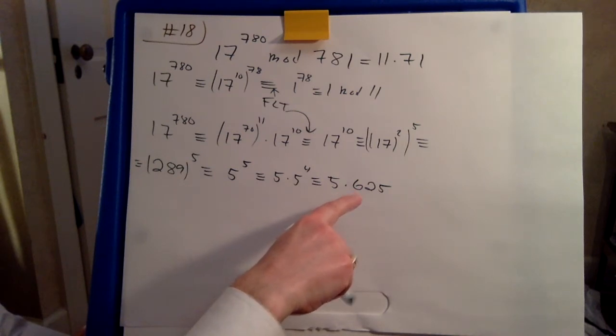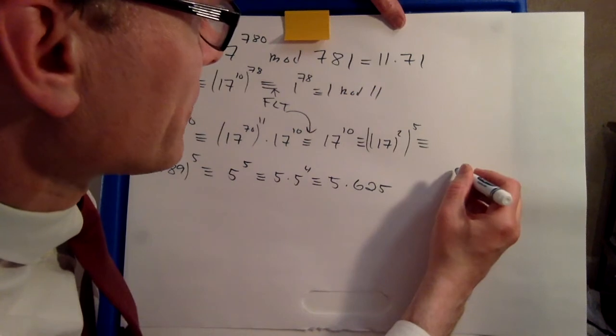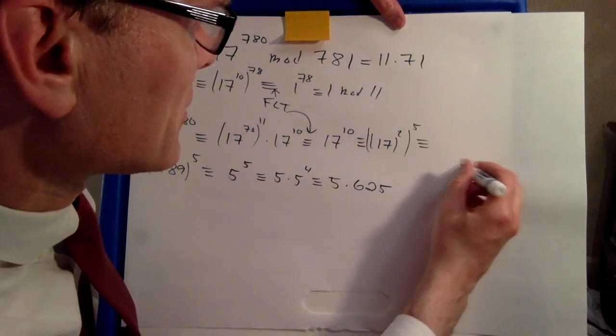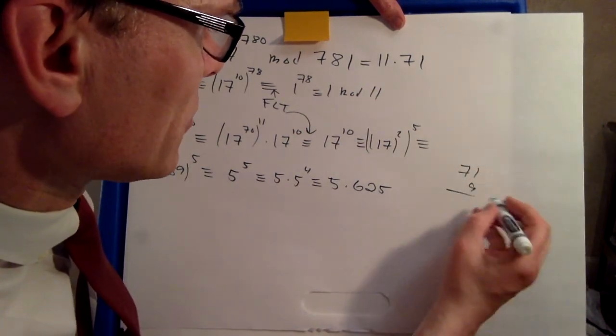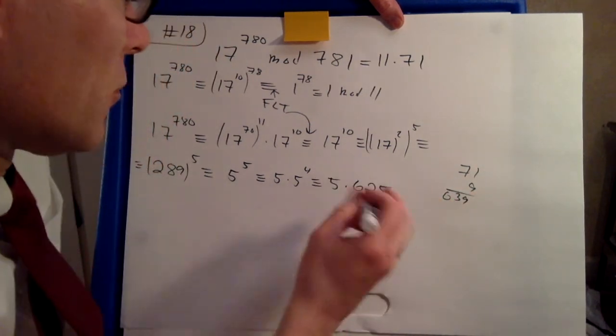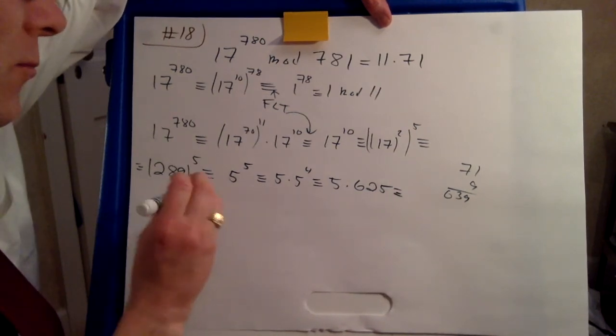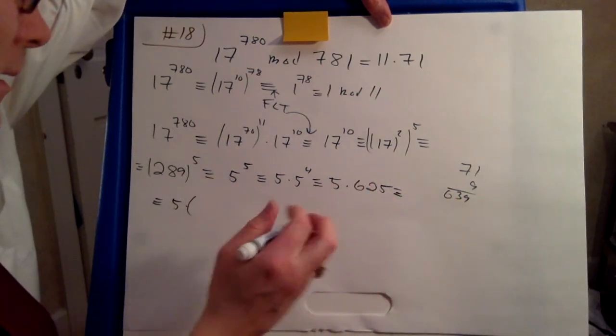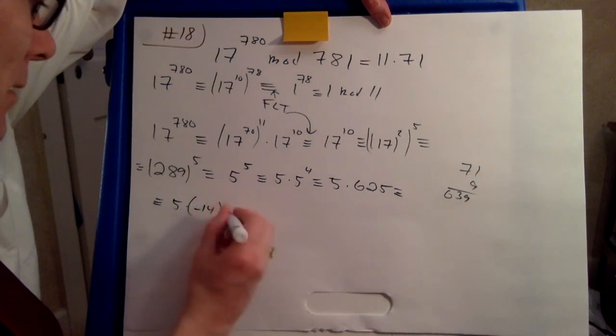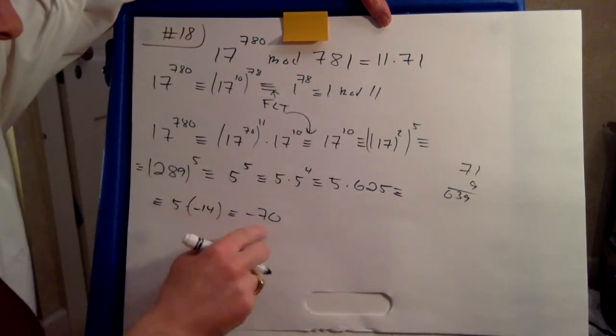What else? I'm losing myself. No, 71 times 9. If you do that, 6, 3, 9. So I'm overshooting here by the difference of 14. So minus 14. So this is minus 70. 5 times 14, 7 minus 7.